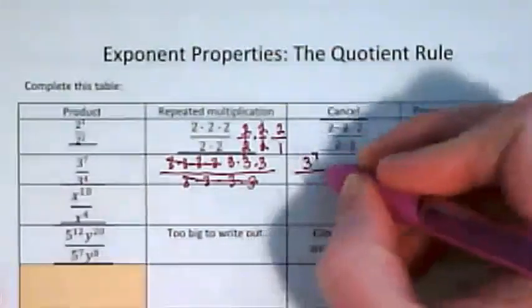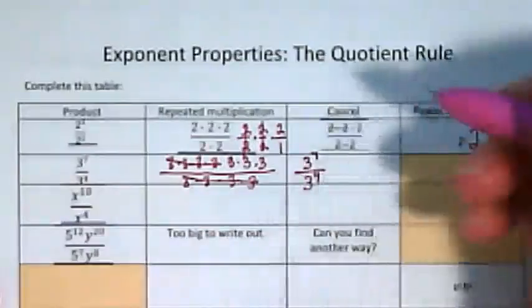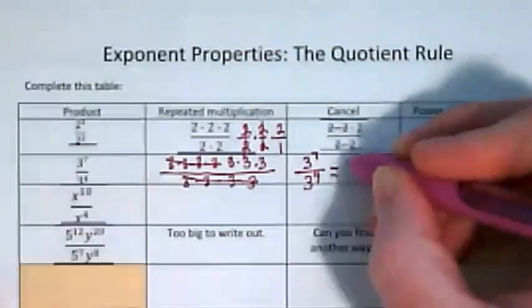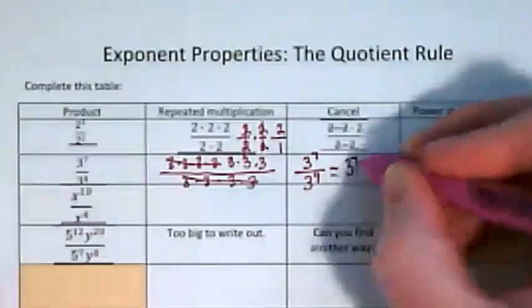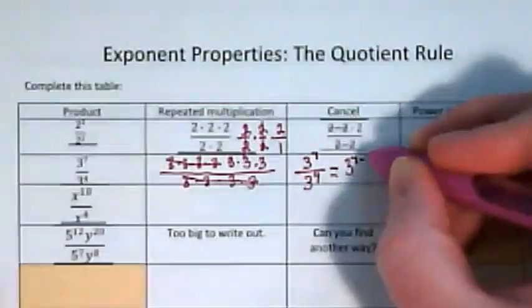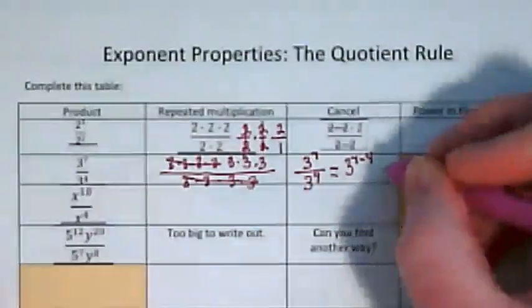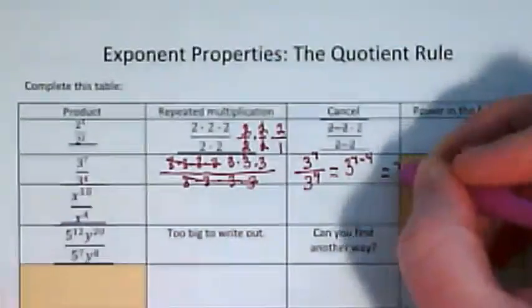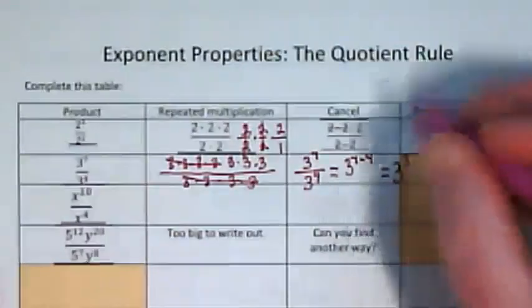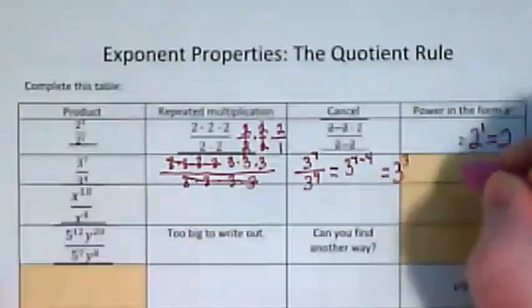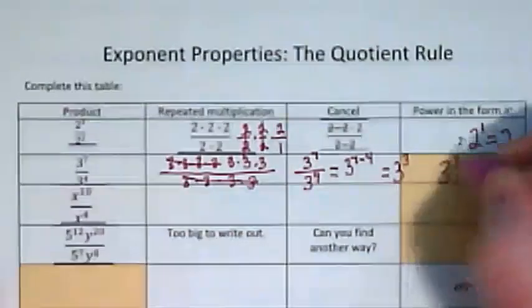3 to the seventh power over 3 to the fourth power. When I have the same base, I can take the exponent from the numerator minus the exponent from the denominator. That gives me my result. 7 minus 4 is 3, so the answer to this one is 3 to the third power.